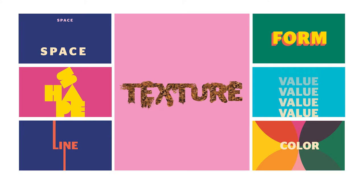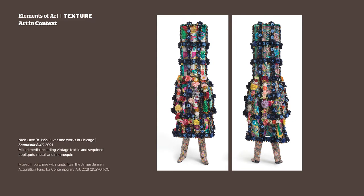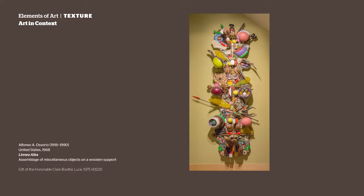Texture is one of the seven elements of art, which includes space, line, shape, color, value, and form. The elements of art are the building blocks that artists use to create artworks. Think of them as ingredients in a recipe — each element adds its own unique flavor or visual quality to the finished product. Artists can use a few of the elements or all of them, each in their own individual way.